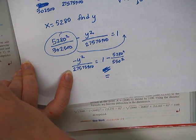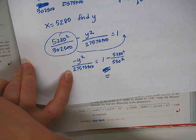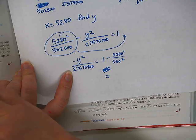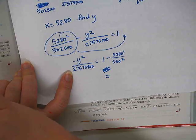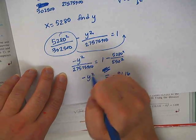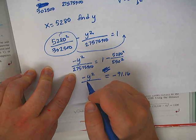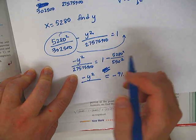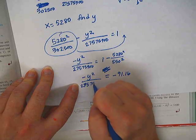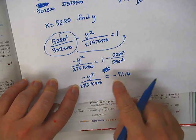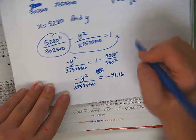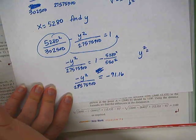So we'll have a negative y squared over 27575900 equals 1 minus 5280 squared over 550 squared. That's easier to write. That's why I did it that way. So this thing will equal 5280 squared divided by 550 squared is 92.16. So we go 1 minus 92.16, and we get negative 91.16. And that's negative y squared over, what was this number? Oh, that was one we calculated. Okay, so over 27575900.